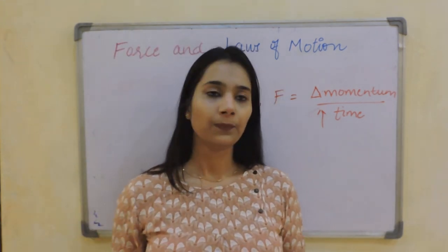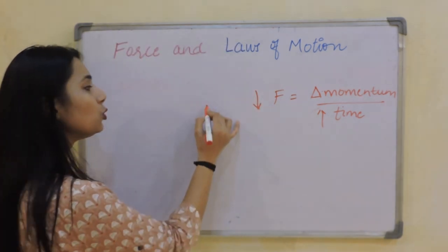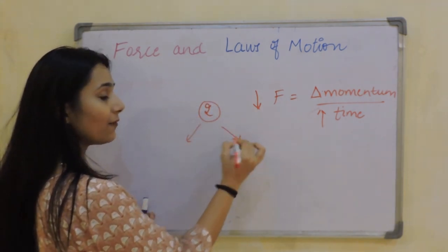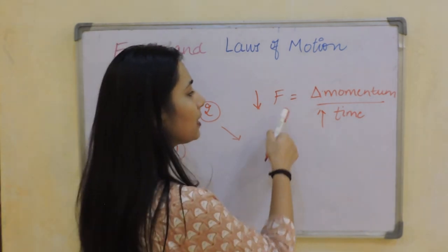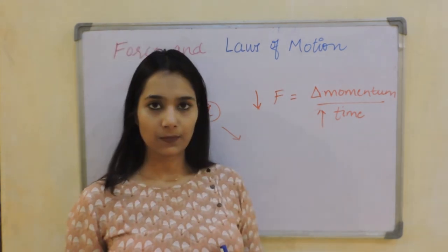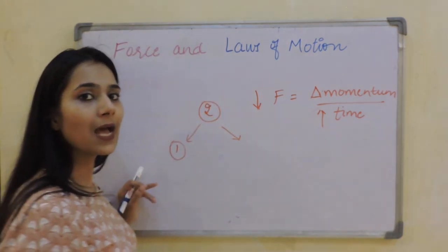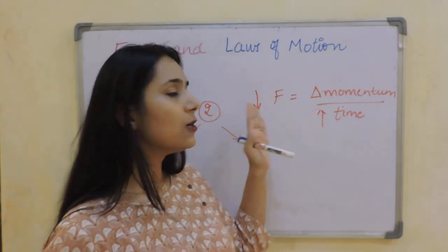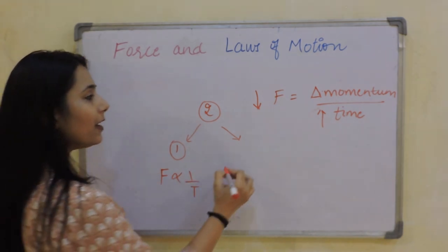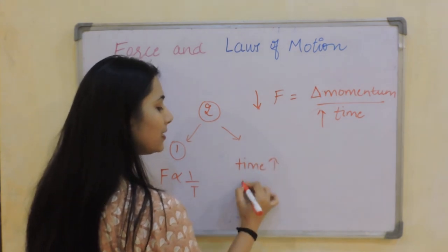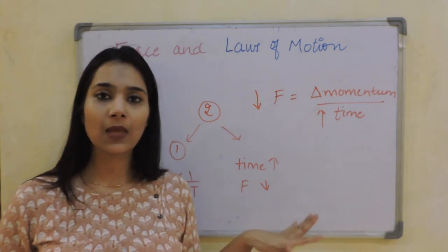Much less force is applied on you. These types of questions are basically 'give reasons why' questions — they might come for two marks or one mark. For two marks: one mark is for stating the relation — for example, 'force is inversely proportional to time' — and one mark is for the consequence, 'as the time increases, the force decreases.' That is the marks scheme being followed.